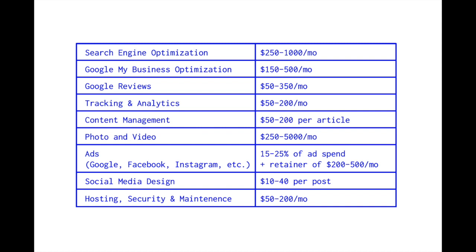The first thing on the list is search engine optimization, and this is actually at the core of my business. I feel strongly that SEO, among all the other monthly services you could offer, brings probably the most value. For my local business clients, once I build a website they want to get local traffic, and SEO is a great way to get that organic reach. I charge anywhere from two hundred fifty to a thousand dollars per month, and you can certainly charge more depending on the size and budget of the business.